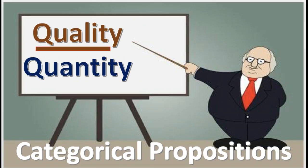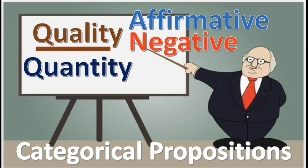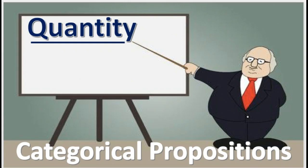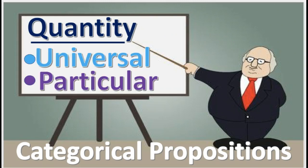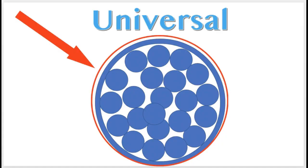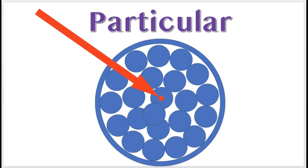We've already talked about quality, which is affirmative or negative. Now let's talk about quantity, which is universal or particular. A universal means everyone, all, the whole, the entire group. But a particular, on the other hand, means only some, only part, only part of the group — individuals.